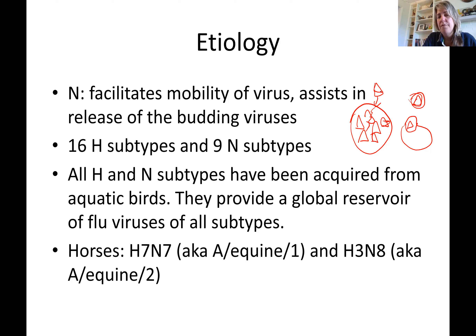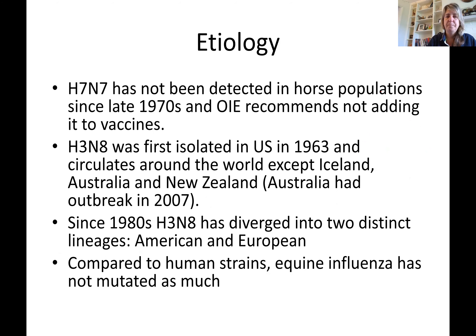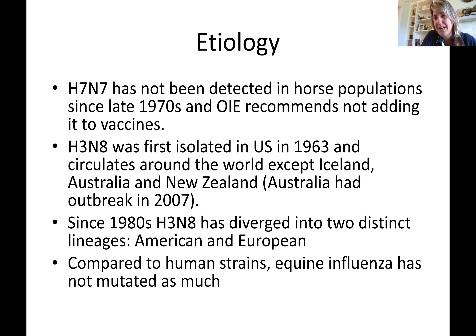All the H and N combinations have been acquired from aquatic birds, which provide a global reservoir for the influenza virus of all subtypes. Horses are generally affected with H7N7 and H3N8. In horses, the influenza virus has mutated somewhat but is not as highly mutated as in humans. H7N7 hasn't been seen much in horses anymore, although it's still included in most equine vaccinations.